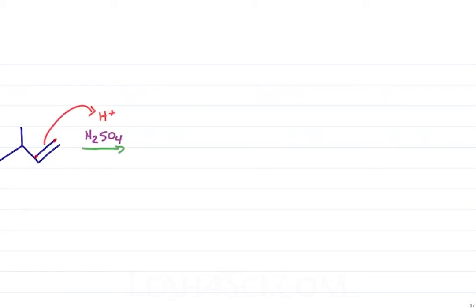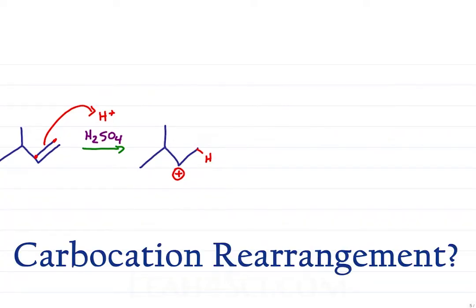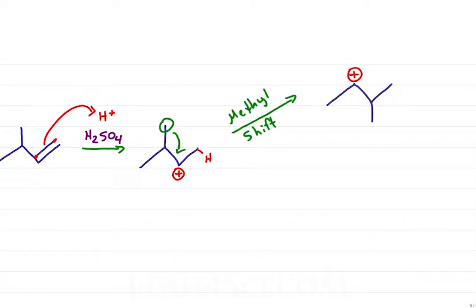Say you're working on this mechanism and find yourself with a carbocation intermediate. Are we good? Or can I do a carbocation rearrangement to make it even more stable? Methyl shift or hydride shift? That's exactly what we're going to cover in this Leah4Sci video.